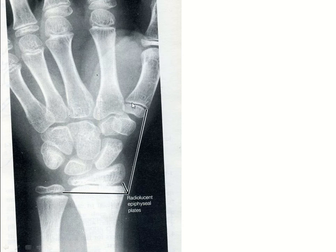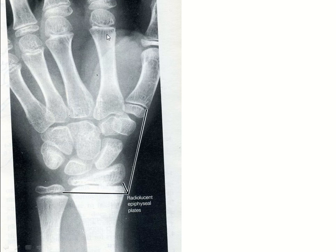This is an X-ray of a child. You can see the first metacarpal bone with its epiphysis, the big area for the epiphysial cartilage, and the diaphysis. For the second, third, fourth, and fifth metacarpal bones, you can also see the epiphysis and epiphysial cartilage.